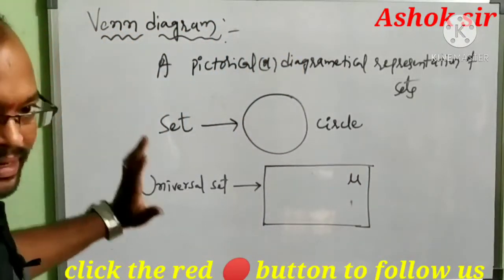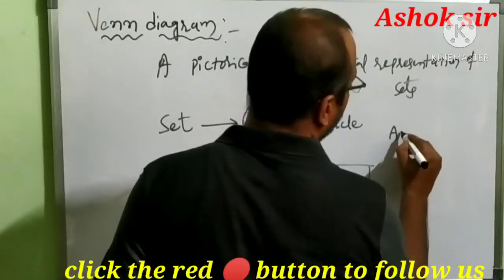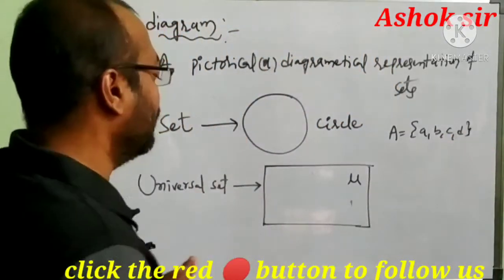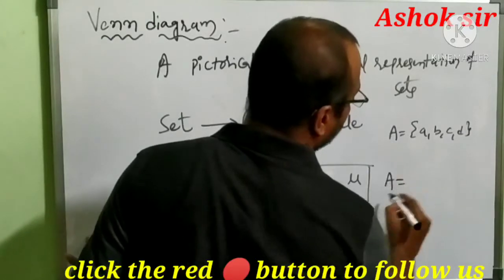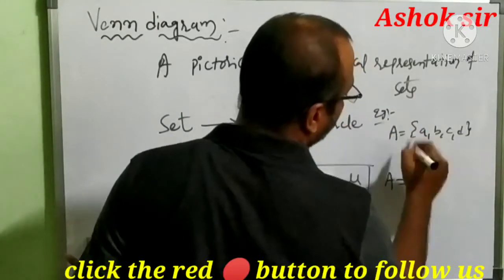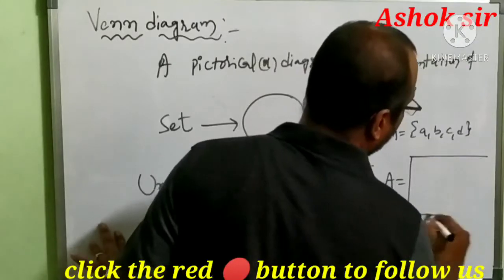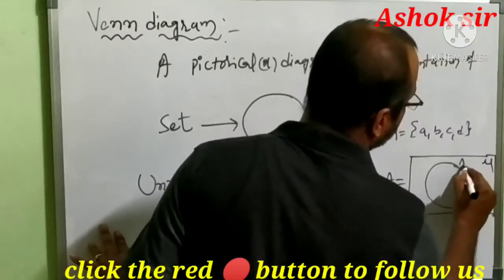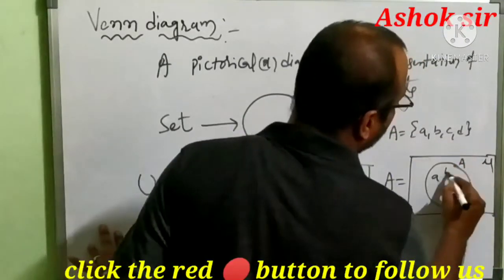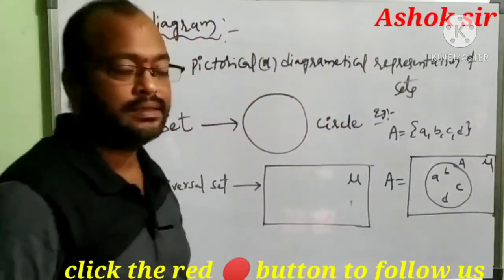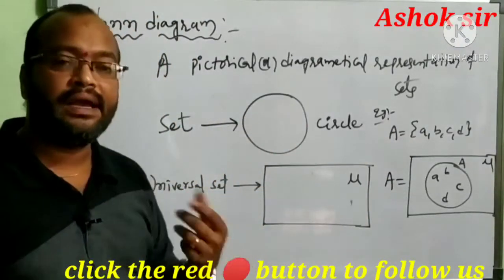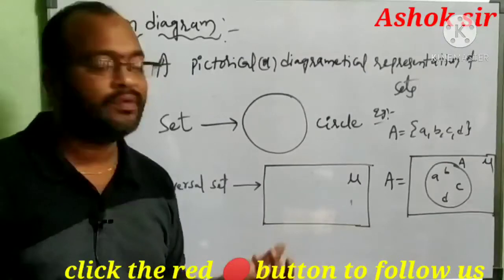This is the universal set. If you want to represent a set in Venn diagram form — suppose A = {a, b, c, d} — we take the rectangular box for the universal set and draw circle A inside it containing elements a, b, c, d. This is the Venn diagram form of a set. Now we will discuss how to represent A union B, A intersection B, A minus B, and everything.